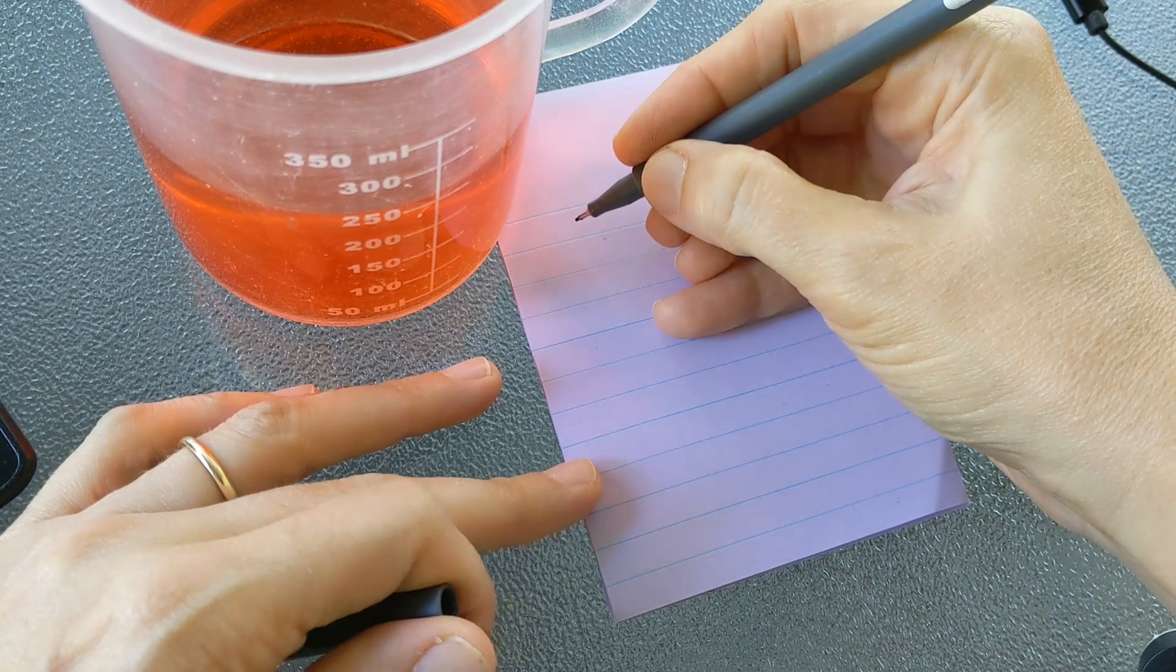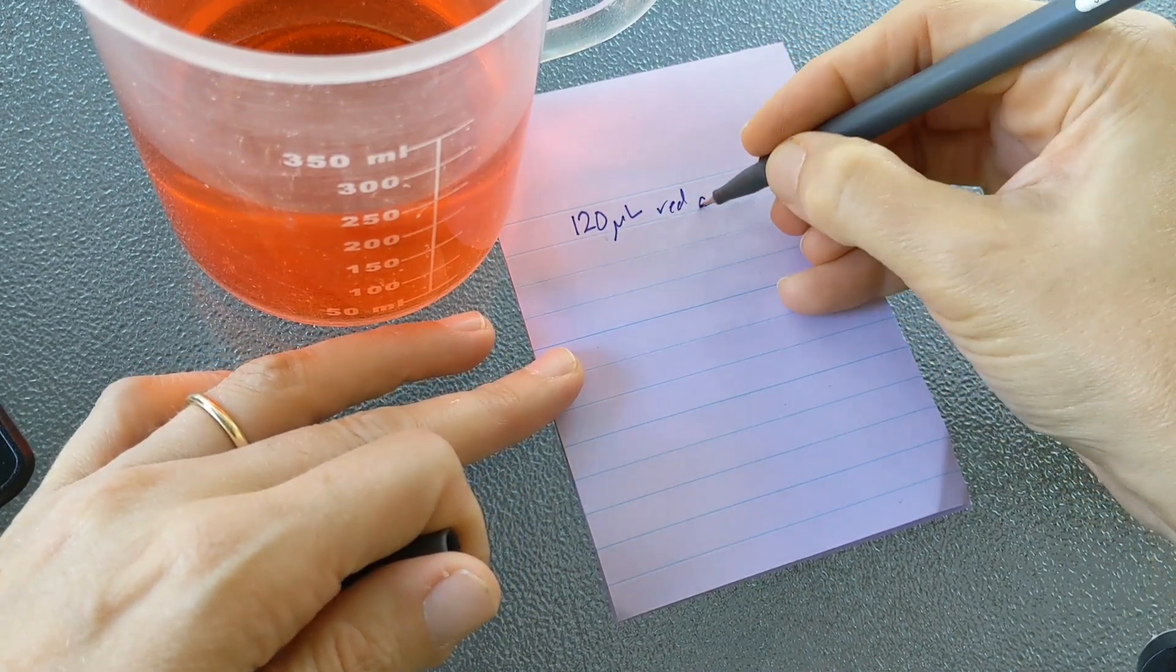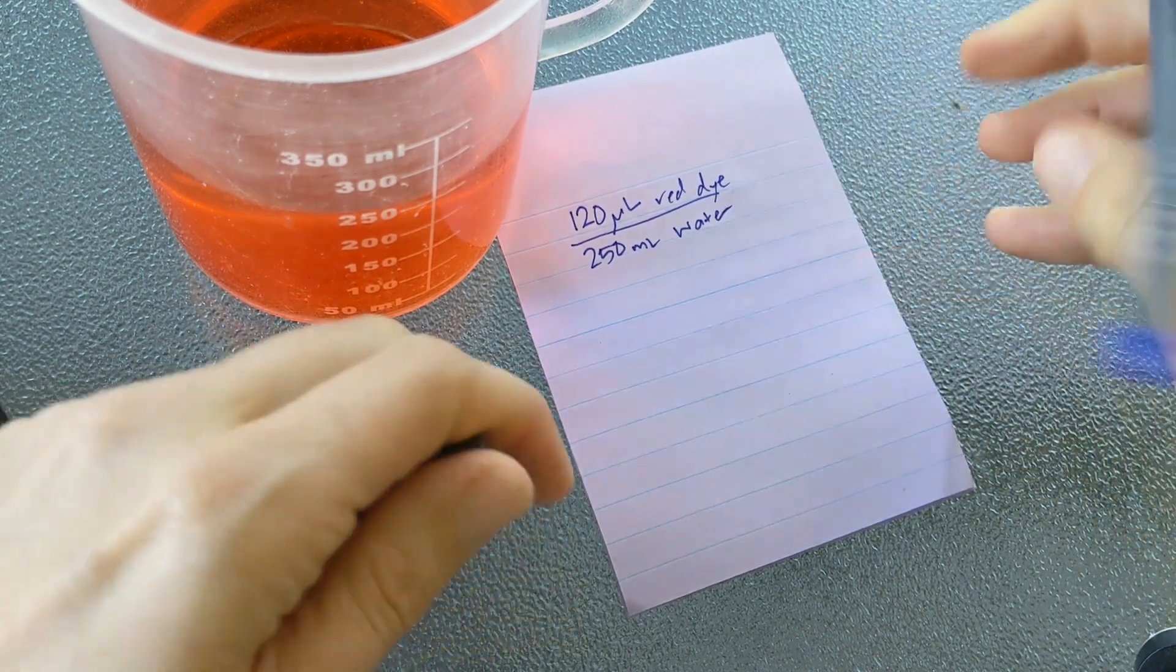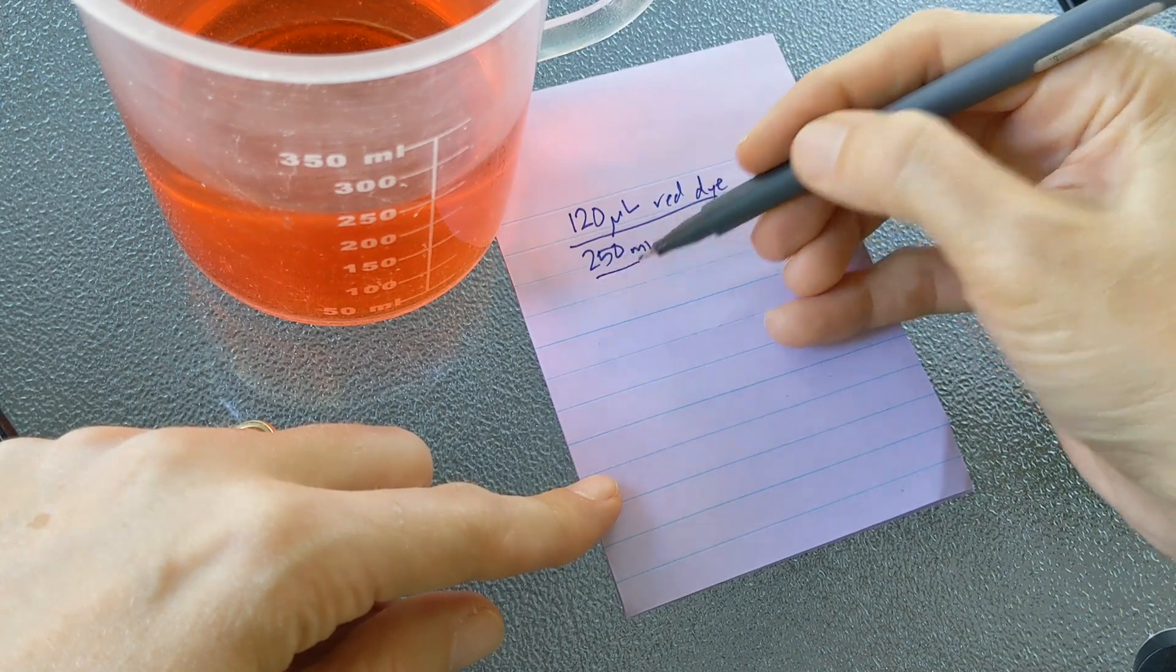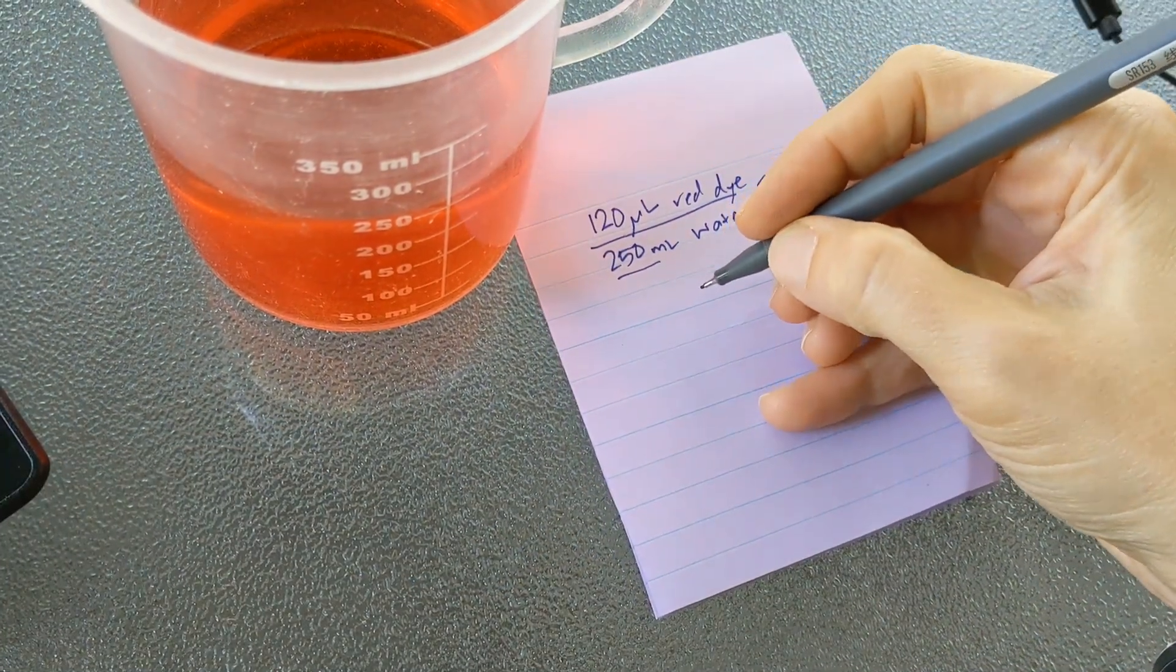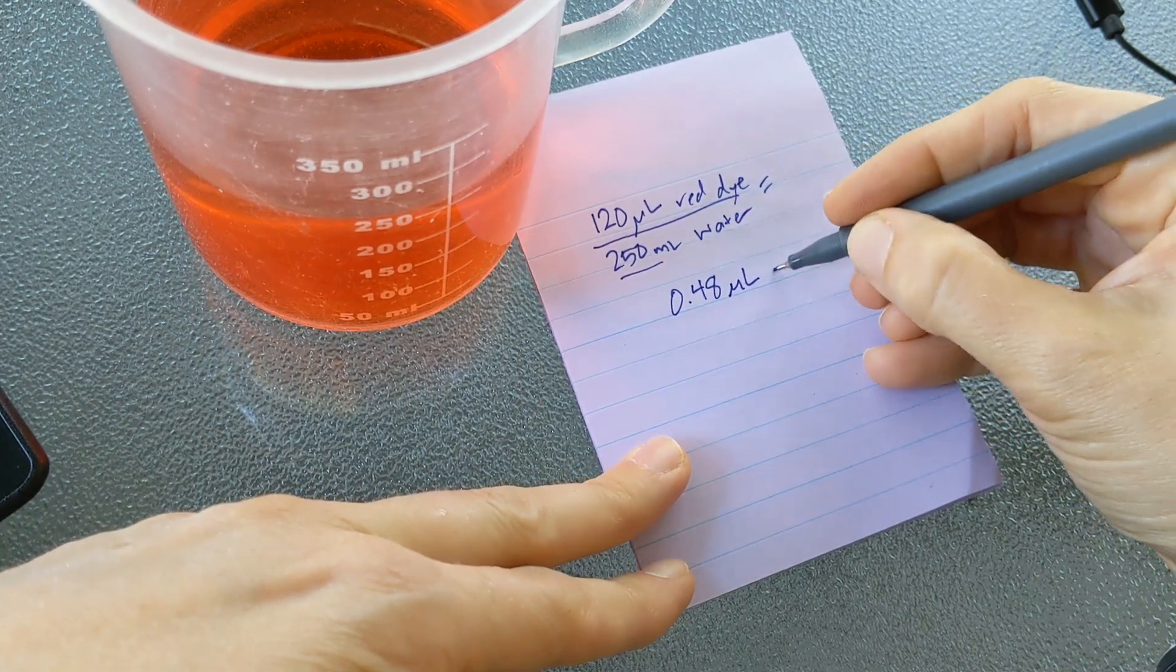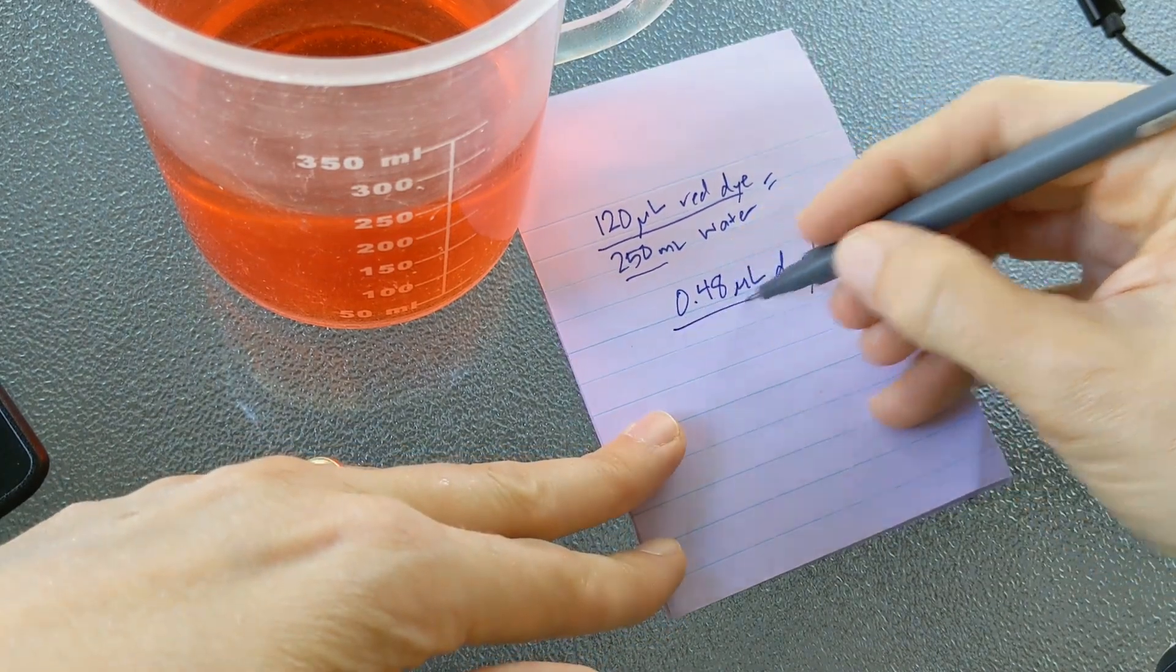So I added 40, 40, 40. I did it three times, so my total amount of dye was 120 microliters of red dye, and the amount of water that I added it to was 250 milliliters of water. That's my total solution. I don't have to add my solute because it's in a unit that's a thousand times smaller, so it doesn't make any measurable difference to the total volume of my solution. Then I calculate it out. Couldn't do that in my head, so I had to take a quick visit to my calculator. It comes out to 0.48, and it's really important that they write that as microliters of dye per milliliter of solution, or at least microliters per milliliter. This is our mystery solution value.